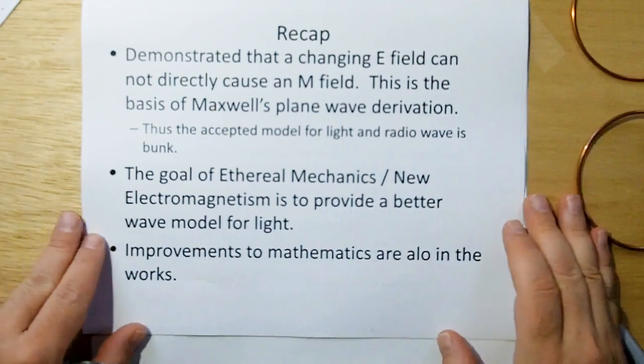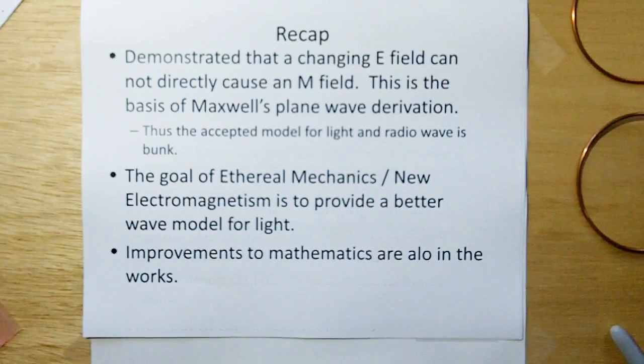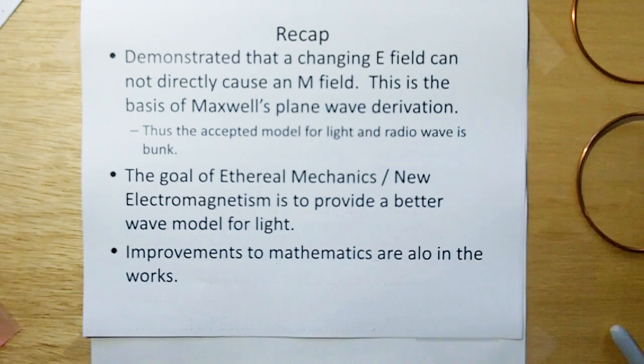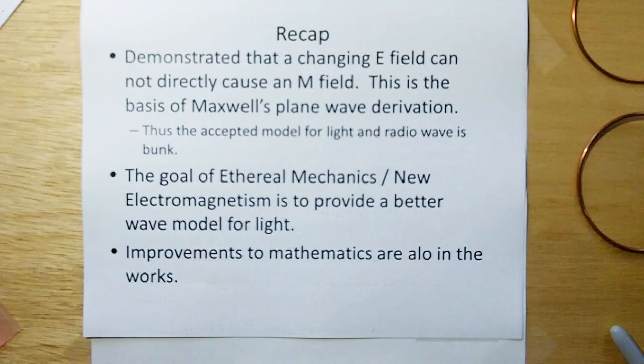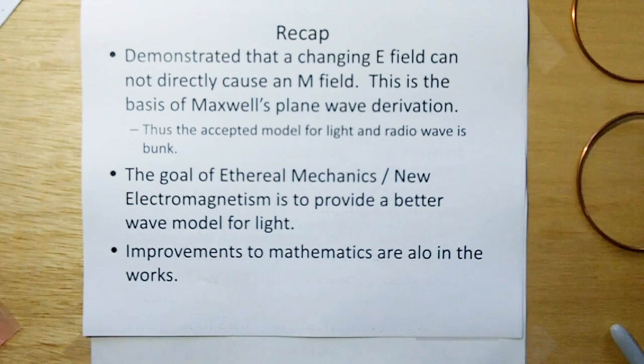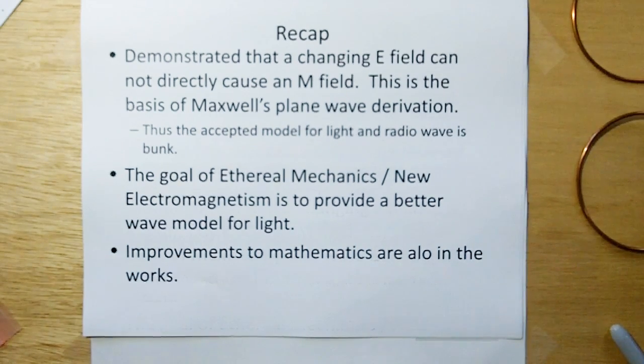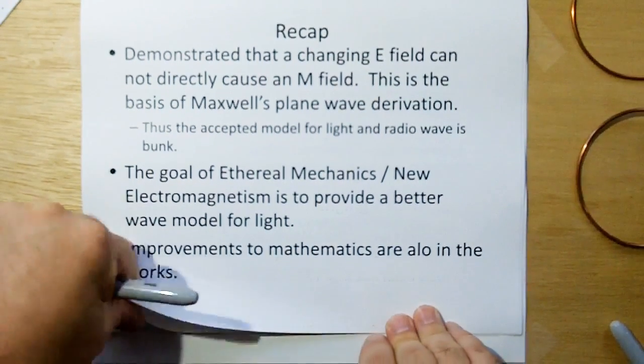And derivations need to be verified by observation. So to recap, we demonstrated that a changing electric field cannot directly cause a magnetic field. This is the basis of Maxwell's plane wave derivation. Thus, the accepted model for light and radio waves are bunk. The goal of ethereal mechanics and new electromagnetism is to provide a better wave model for light and improvements to mathematics are also in the works.